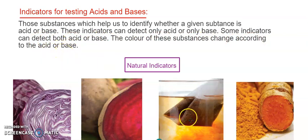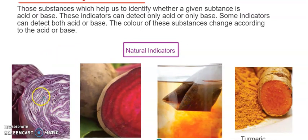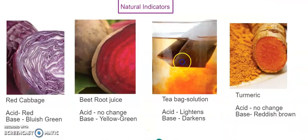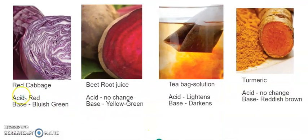The first type is natural indicators: red cabbage juice, beetroot juice, tea dipped in hot water, and turmeric powder dissolved in water. When red cabbage juice is mixed with an acid, it changes the color to red; when mixed with a base, it changes the color to bluish-cream.